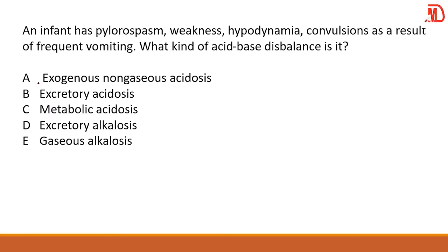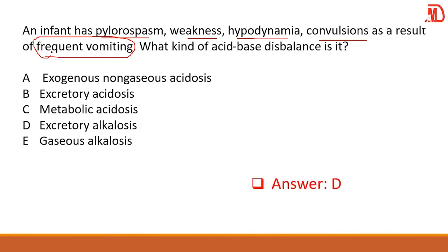An infant has pylorospasm — the pyloric part of the stomach is undergoing spasm — with weakness, hypodynamia, and convulsions as a result of frequent vomiting. Frequent vomiting means you are losing a lot of acid, so alkalosis will ensue — either excretory or non-gaseous alkalosis. If it were excretory acidosis, you would see diarrhea. The answer is D.